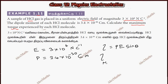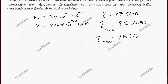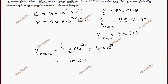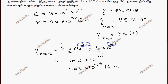For maximum torque, sin theta equals 1. So tau max equals P times E, which is 3.4 × 10⁻³⁰ multiplied by 3 × 10⁴, giving 10.2 × 10⁻²⁶ newton meter. This is the maximum torque.